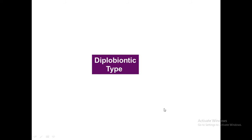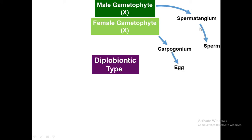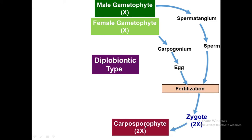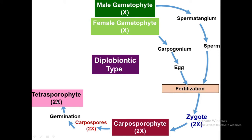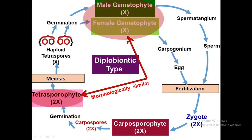The diplobiontic type life cycle starts with morphologically different male and female gametophytes. The male gametophyte produces spermatangium, whereas the female gametophyte produces carpogonium. Spermatangium develops sperm and carpogonium develops egg. Fertilization of sperm and egg results in a diploid zygote, which develops into a diploid carposporo-phyte that produces diploid carpospores. After germination of these carpospores, a tetrasporophytic stage occurs, which is again diploid. Meiosis occurs in the tetrasporophyte to form haploid tetraspores, which germinate to give rise again to male and female gametophytes. The gametophyte and tetrasporophyte are morphologically similar stages, whereas the tetrasporophyte and carposporo-phyte are both diploid stages.